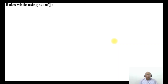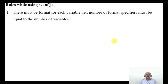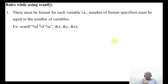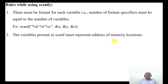Now, the rules to follow when using scanf. Rule 1: there must be a format specifier for each variable — that is, the number of format specifiers must equal the number of variables. For example, if you have %d, %f, and %c as format specifiers, then you should have &x, &y, and &z as variable addresses.